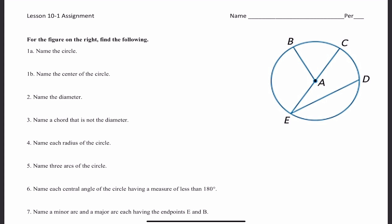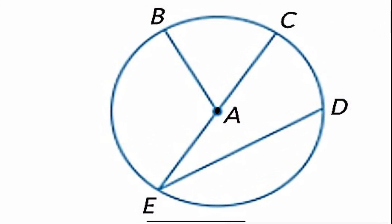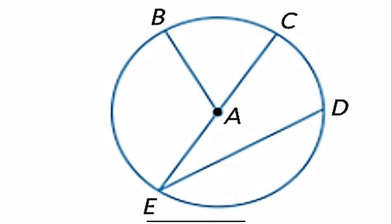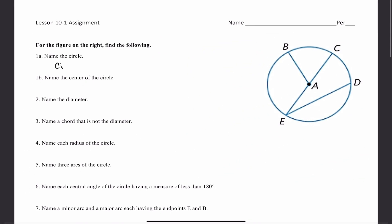To name a circle, all you have to do is look at the center point of that circle. So if I were to zoom in, this right here is the center point. We can see that's point A. Therefore, this circle is called Circle A, because you just look at the center point — that's how you name the overall circle.